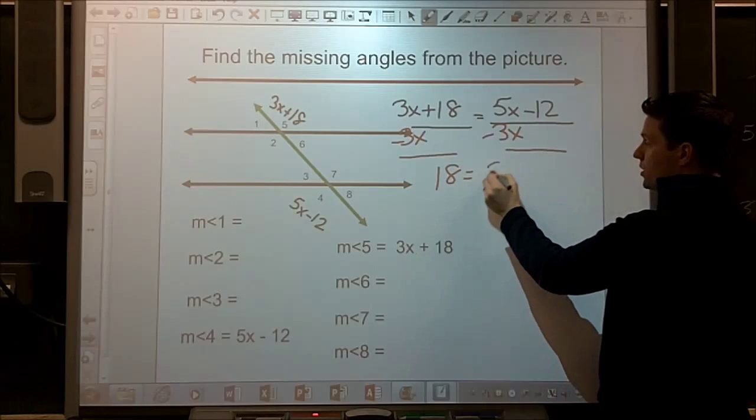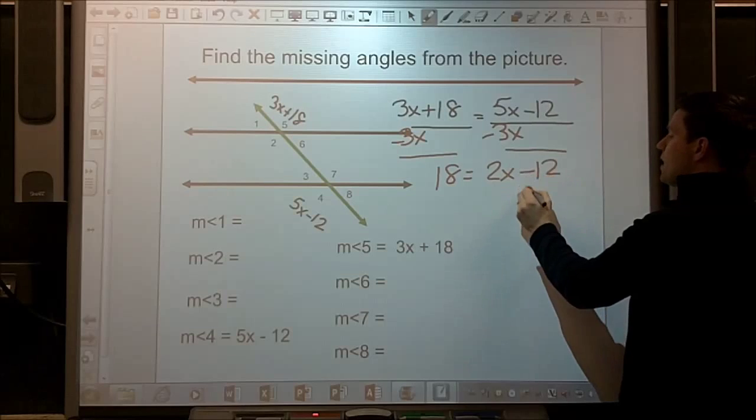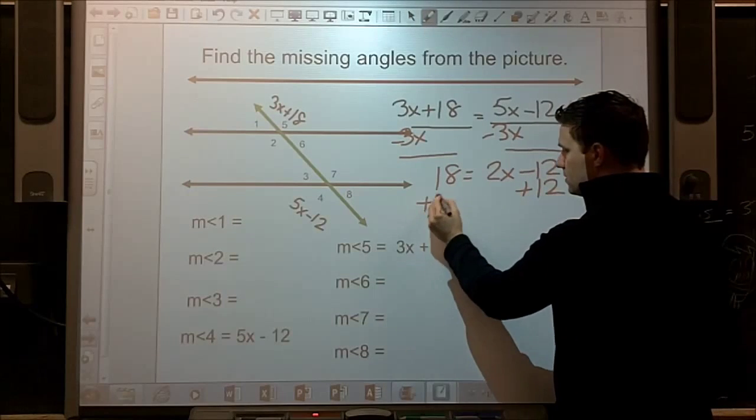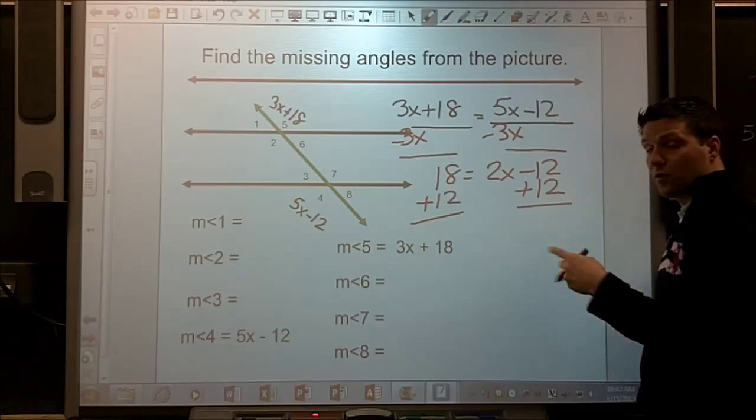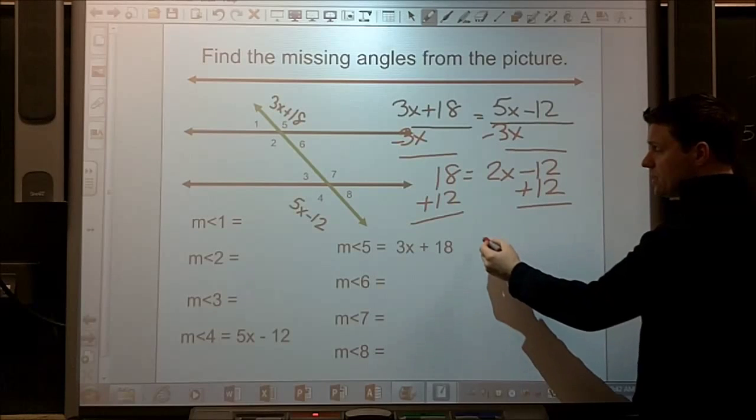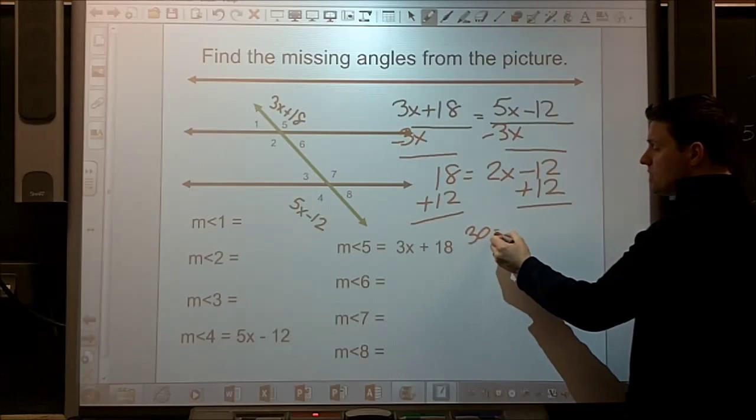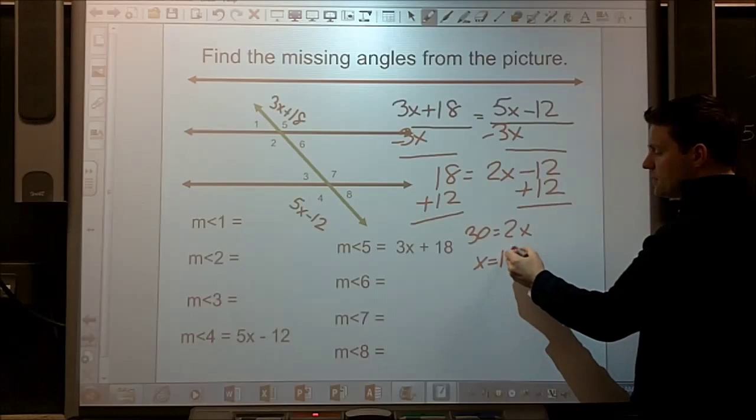And let's do some solving. I'm going to bring the 3x first. So 18 is equal to only 2x minus 12. Add the 12. Pause the video if you want to do this stuff on your own and just jump right to the answer. 30 is equal to 2x. That means x is 15.